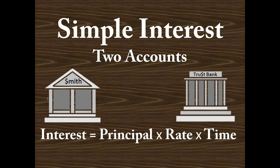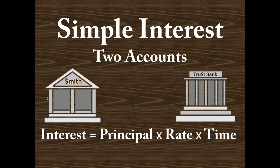Before we get started, we want to make sure we have our interest equation down. Interest is equal to the principal times the rate times the time. The principal is the amount we invest, the rate is the percentage at which we invest it, and time is the amount of time we invest, which is in terms of years. In short, we write it as I equals PRT.